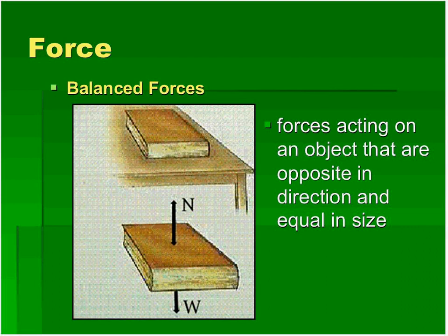Here, a book is kept on a table. Because of the weight of the book, weight acts always in the downward direction, and the table offers a normal reaction which always acts perpendicular to the surface. These two forces acting on the book are balanced — equal and opposite — which is the reason why the book is not moving.